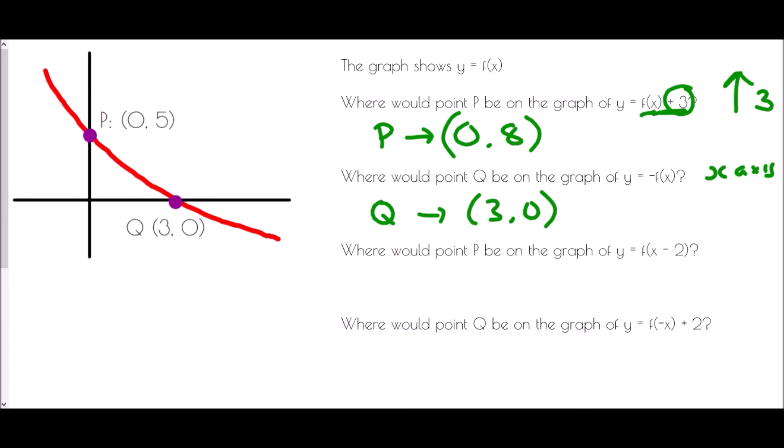Where would point P be on the graph of y equals f of x take away 2? Because this is an addition or subtraction within the bracket, that means it is a translation in the x direction. And because it is within the bracket, we do the opposite of what it says — so negative 2 means it will actually go to the right two places. P would move two places to the right, so the x coordinate would change to 2, but the y coordinate remains as 5.